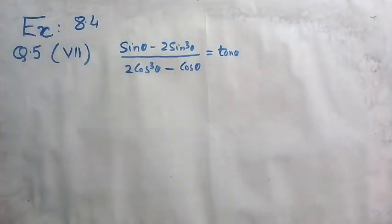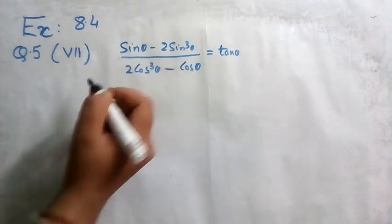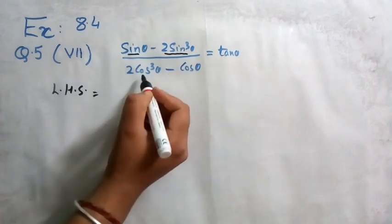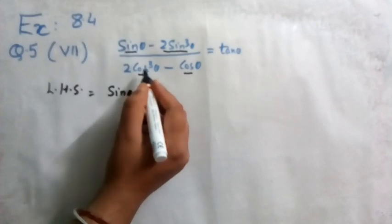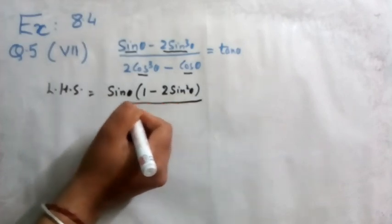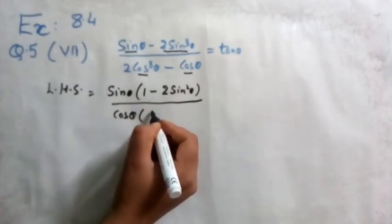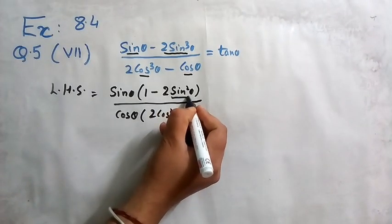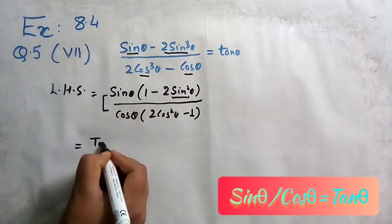Now let us see part seven: (sinθ - 2sin³θ) / (2cos³θ - cosθ) = tanθ. Take the left hand side. In the numerator, sinθ is common; in the denominator, cosθ is common. Take sinθ common in the numerator to get sinθ(1 - 2sin²θ), and cosθ common in the denominator to get cosθ(2cos²θ - 1). We know sinθ/cosθ = tanθ.